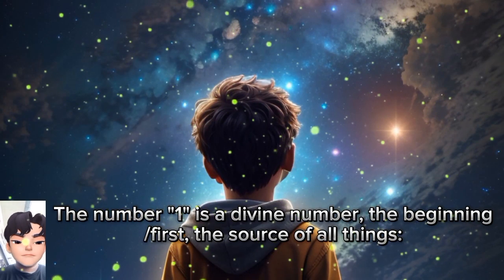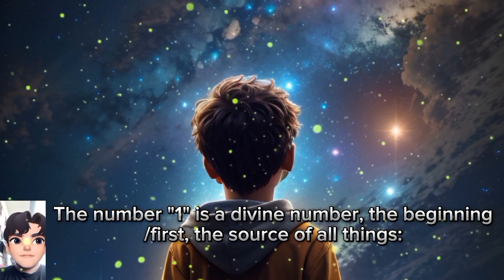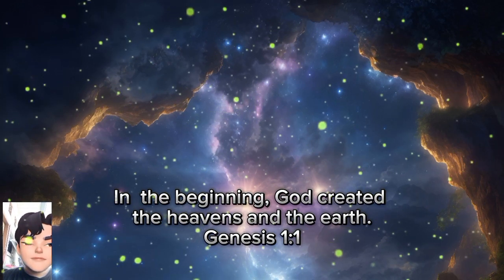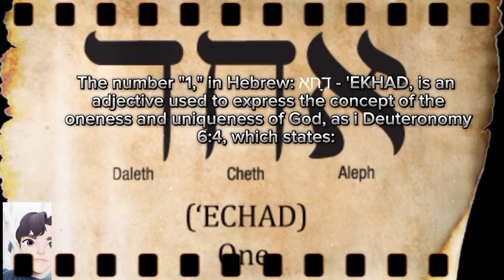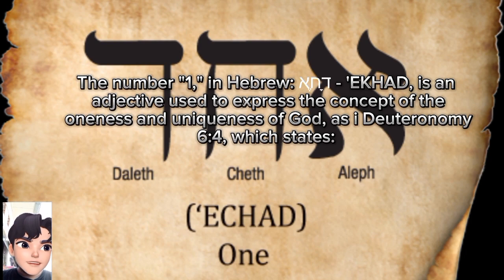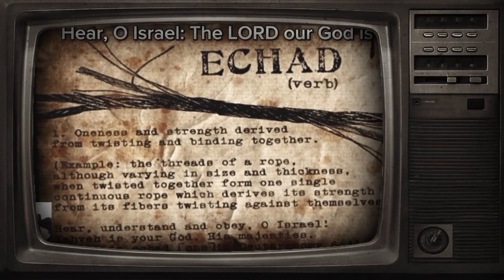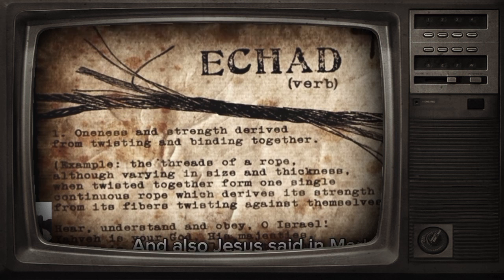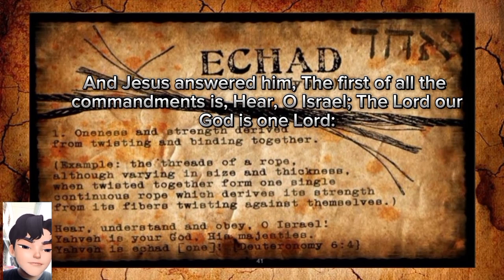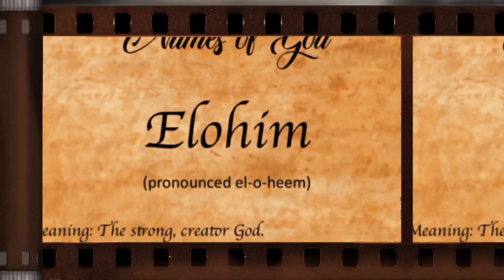The number one is a divine number — the beginning, the first, the source of all things. In the beginning God created the heavens and the earth (Genesis 1:1). The number one in Hebrew, 'echad,' is an adjective used to express the oneness and uniqueness of God, as in Deuteronomy 6:4: 'Hear O Israel, the Lord our God is one Lord.' Jesus also said in Mark 12:29: 'The first of all the commandments is, Hear O Israel, the Lord our God is one Lord.'